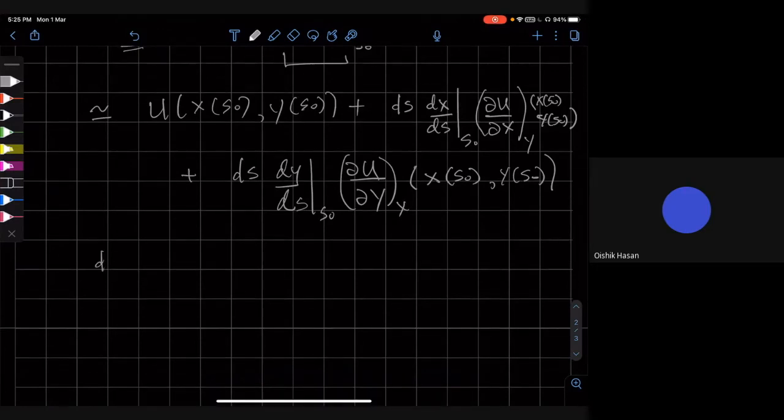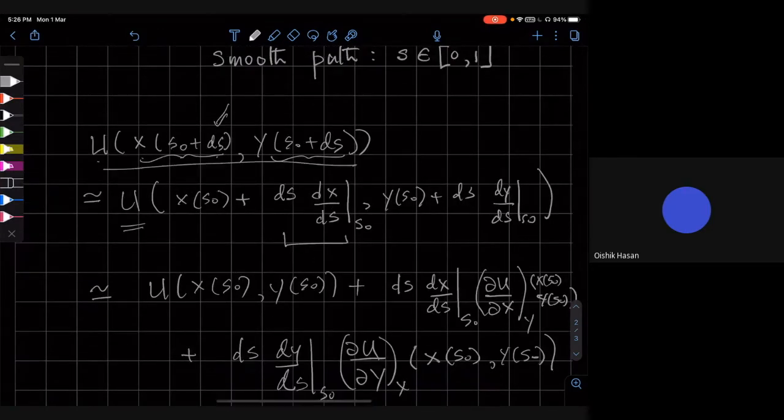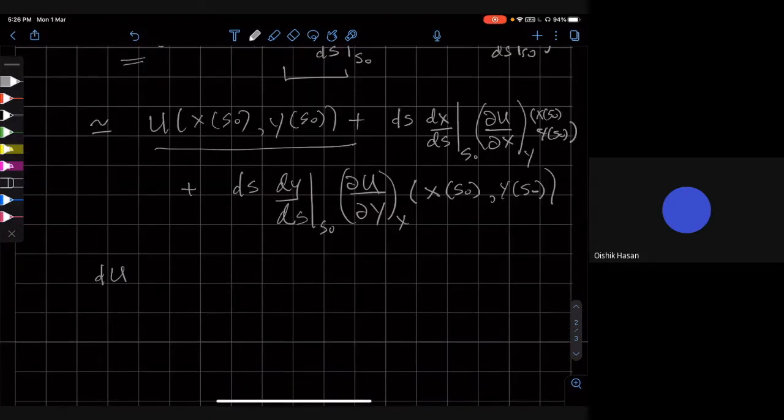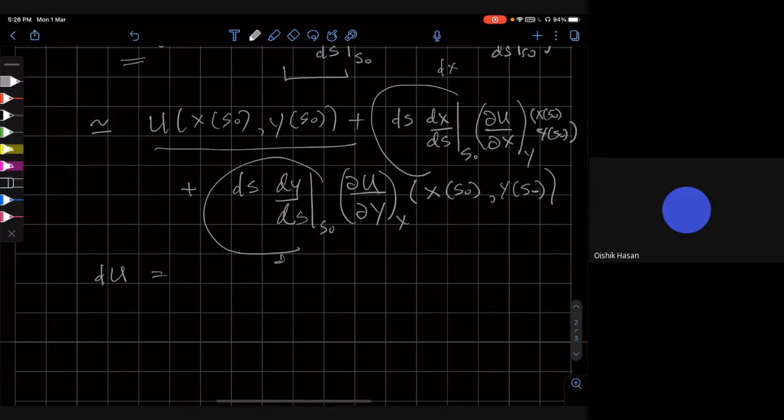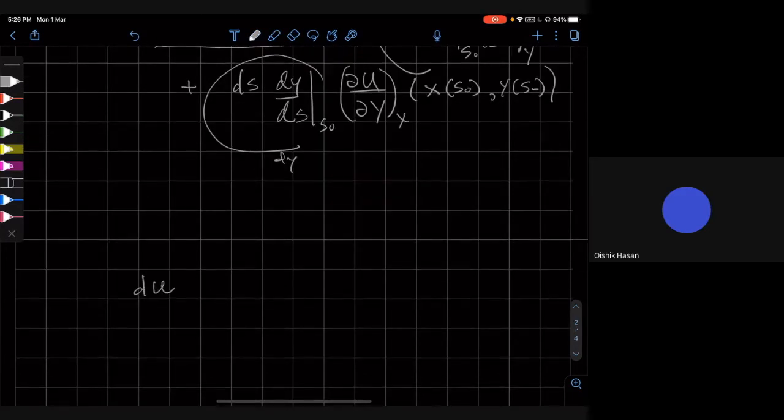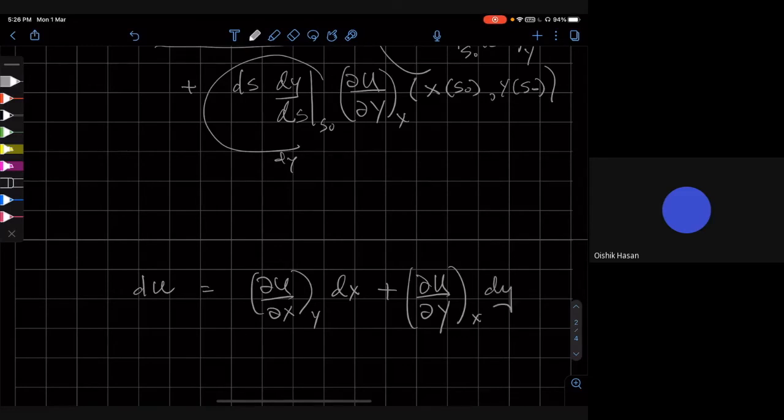So, del of u is going to be this thing minus this thing. And therefore, and we can write, see that this, but this thing is nothing but d of x, and this thing is nothing but d of y, and therefore, we see that d of u is nothing but del u by del x dx plus del u del y dy. Okay?